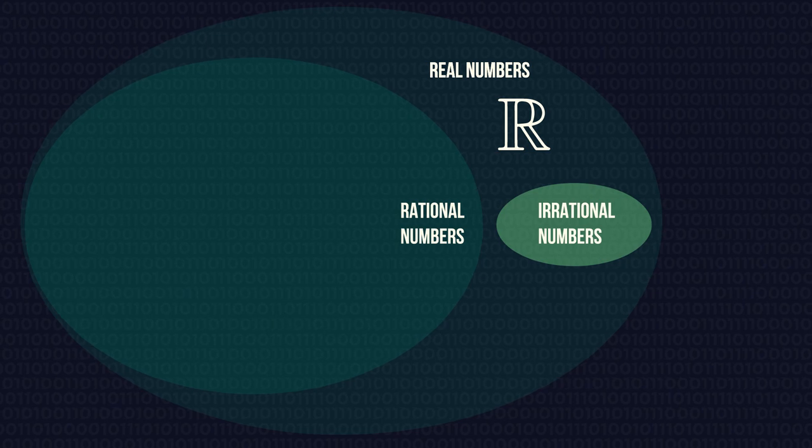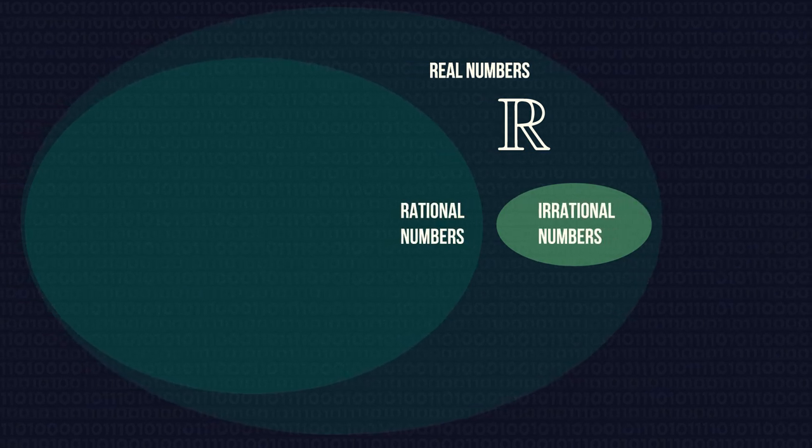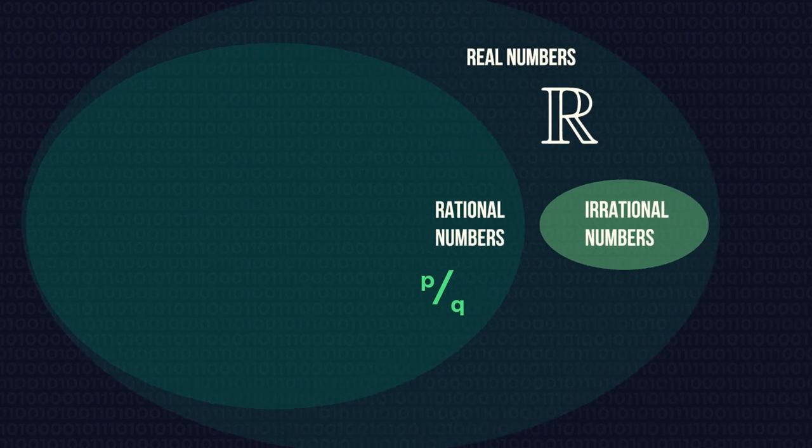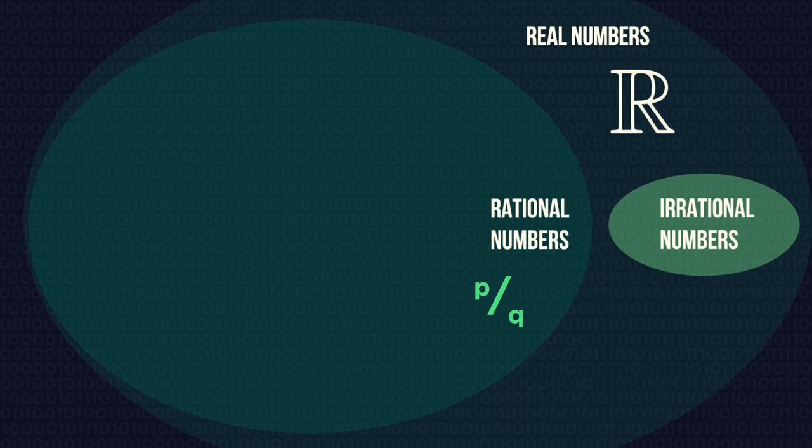Real numbers split into two subsets, rational and irrational. Rational numbers can be written as a fraction. I just remember rational, fractional sound similar.